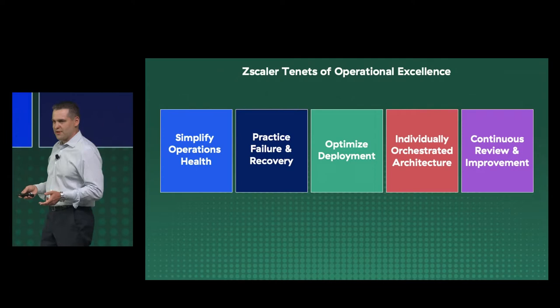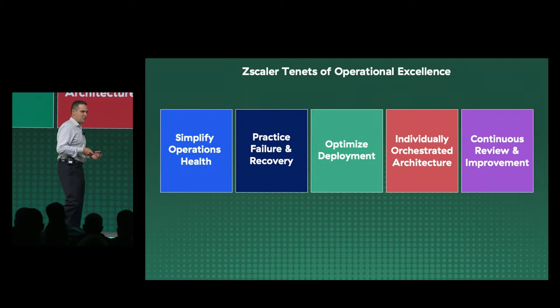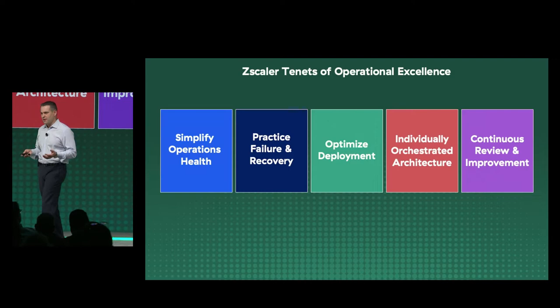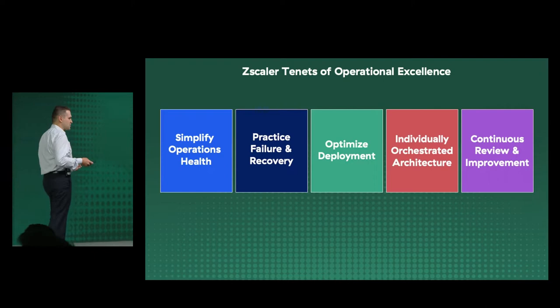The next tenant is individually orchestrated architecture. We keep the network separate from the infrastructure, separate from the code. Individually orchestrated architecture is really hard to do, because it's very easy to add code or functionality to something, and over time it becomes this big monolithic beast that you can't change — it's no longer agile. So we spend a lot of resources on making sure we separate functionality so that things are horizontally scalable and manageable.